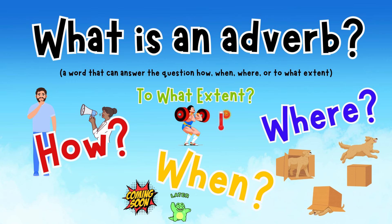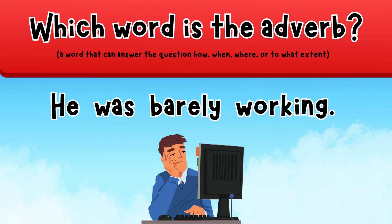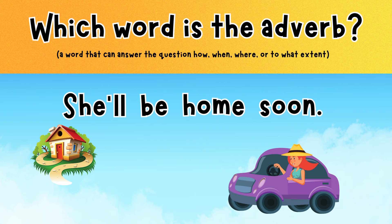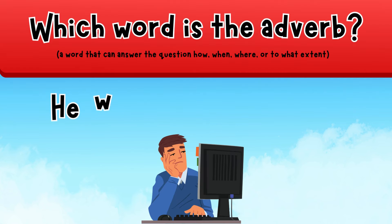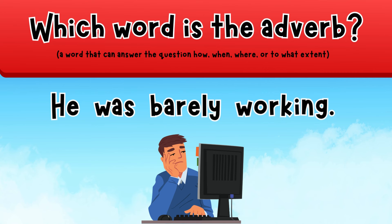So, what is an adverb? Remember, there are lots of different types of words: adjectives, contractions, articles, verbs, nouns, and more. Let's try looking for adverbs in complete sentences. He was barely working. Write the word that is an adverb. Remember to think of questions like how. How was he working? Did you write barely? Barely is the adverb.